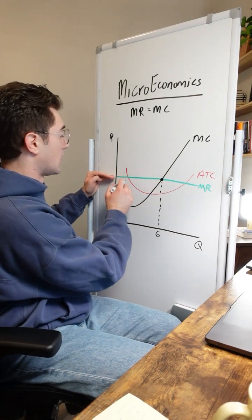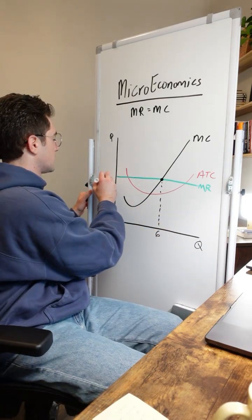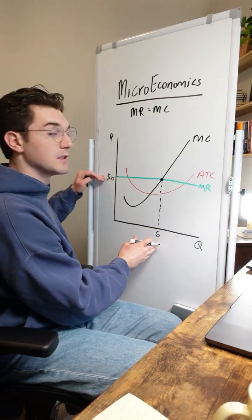Because marginal revenue is horizontal, this is the market price that every other firm in this market's selling at. So we'll call this 10 bucks. So at this point, we're able to determine that this firm is going to sell six units at a price of 10 bucks a pop.